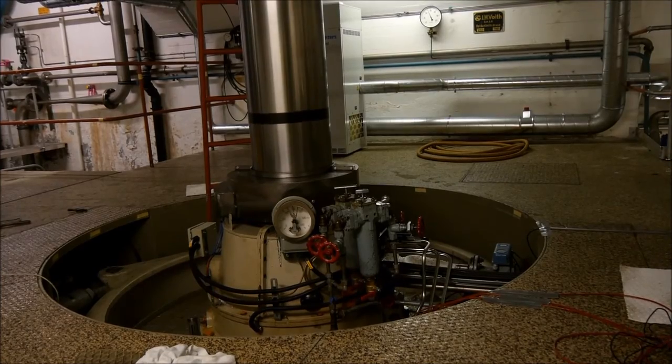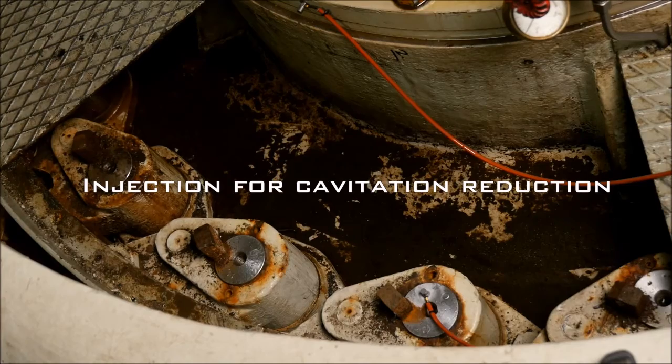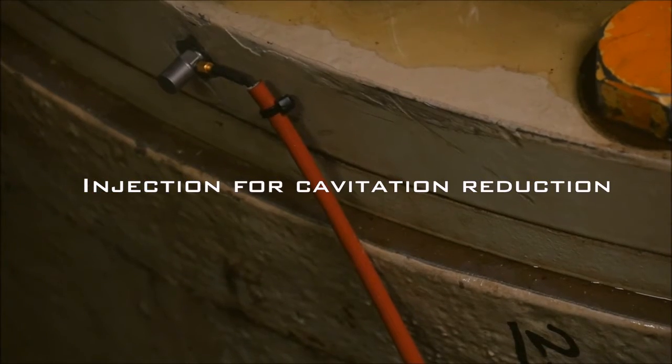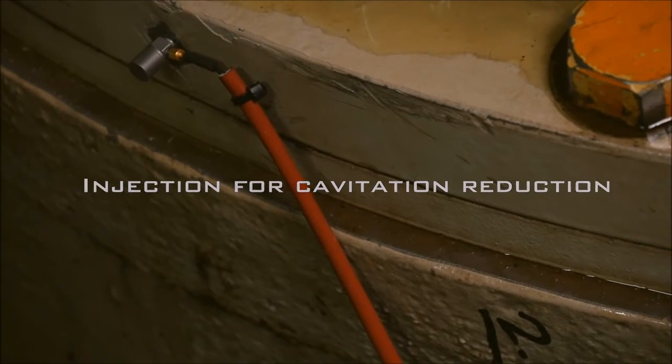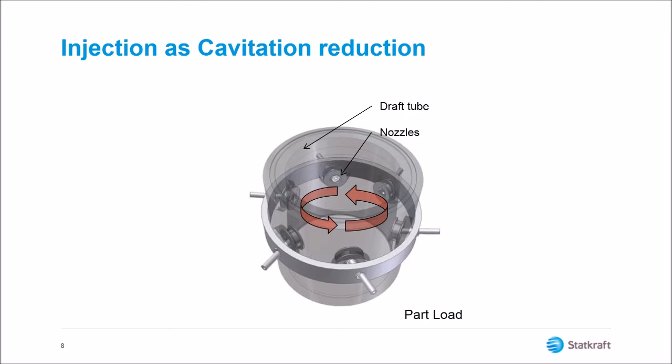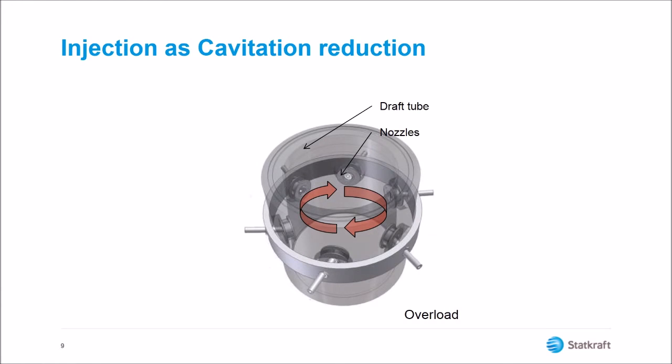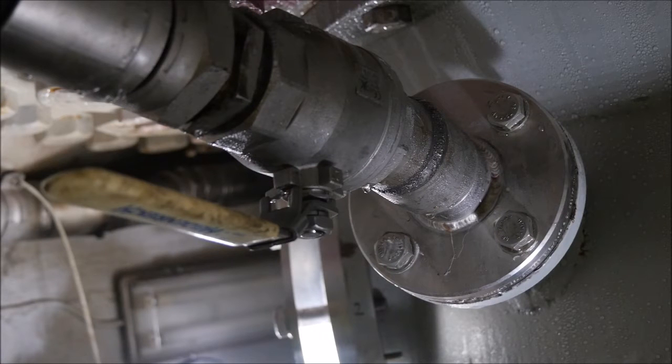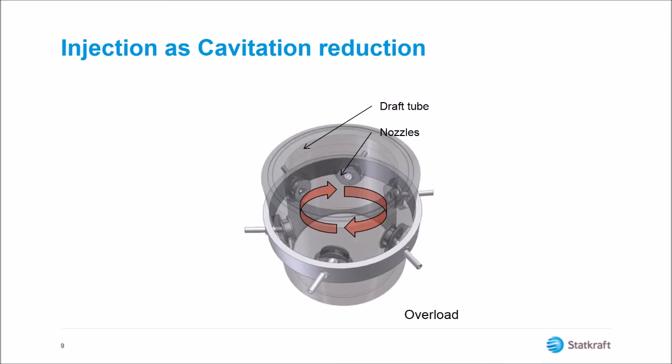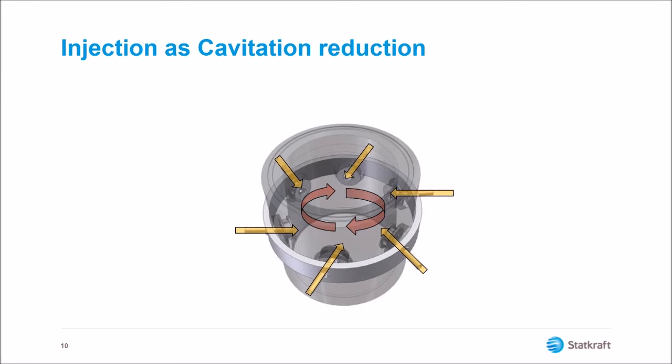The concept of water injection should in theory also apply to high loads, where cavitation often can occur. The spin in the water has at this point changed direction, so the nozzles would have to point in the opposite direction. But the effects should remain similar. Slowing the rotational speed of the water and thereby increasing the pressure in the draft tube should provide a countermeasure for cavitation on the runner blades.